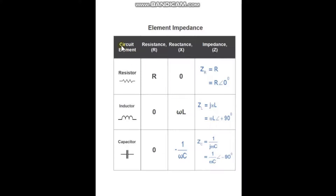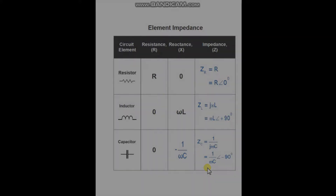For the circuit element of a capacitor, we have a reactance of negative one over omega C, and an impedance of one over J omega C in rectangular form. And in polar form, we have one over omega C at an angle of negative 90 degrees. That's it.